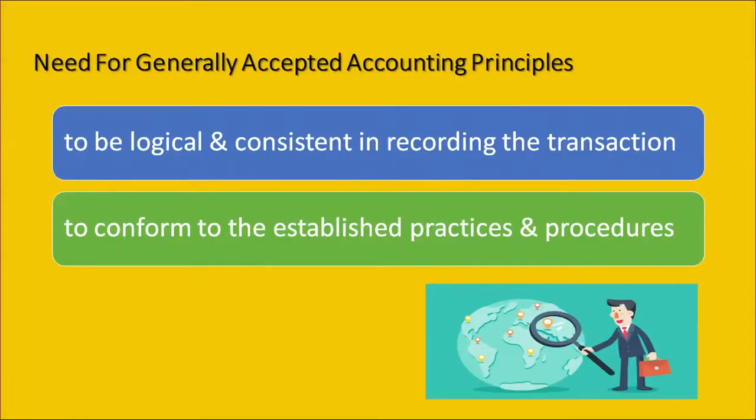Having discussed the accounting cycle, let us now understand the need for generally accepted accounting principles. Why do we need these accounting principles? Firstly, it is very much essential to be logical and consistent in recording transactions. There should be a basis and theory behind the principles, which is why we have generally accepted accounting principles. It is also needed to confirm to established practices and procedures — things which have been followed for years together. We cannot on one fine day come up with our own logic; it should adhere to a system that has been followed for years.